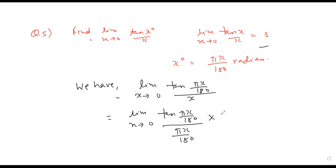X is already there. So we have actually multiplied by pi over 180. So this whole thing becomes 1. So this will be 1 times pi over 180. So answer will be pi over 180.